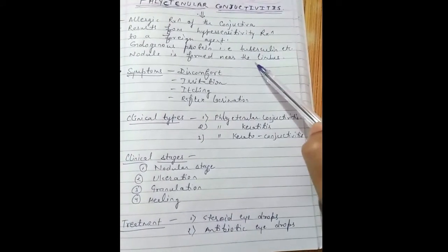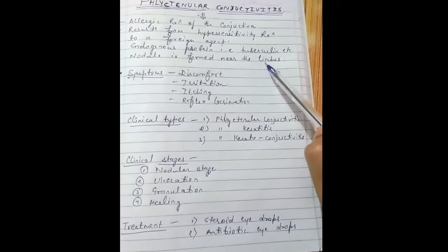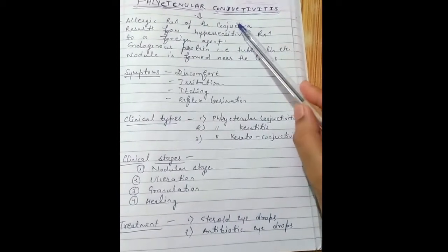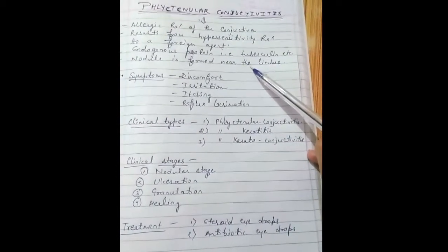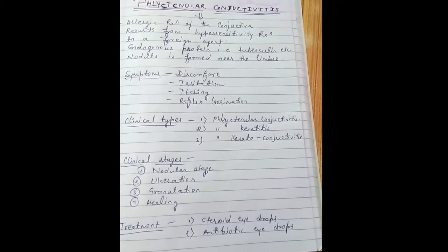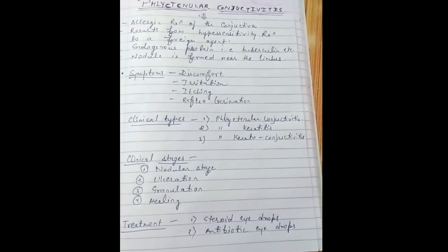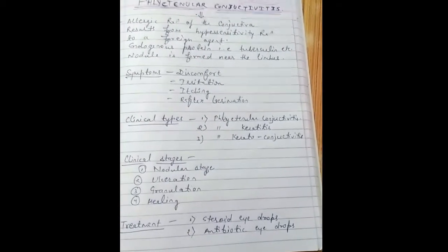The nodule that is formed is known as the phlyctenule, so the disease is known as phlyctenular conjunctivitis. The phlyctenule is pinkish whitish in color, and there may be one or two depending on disease severity.